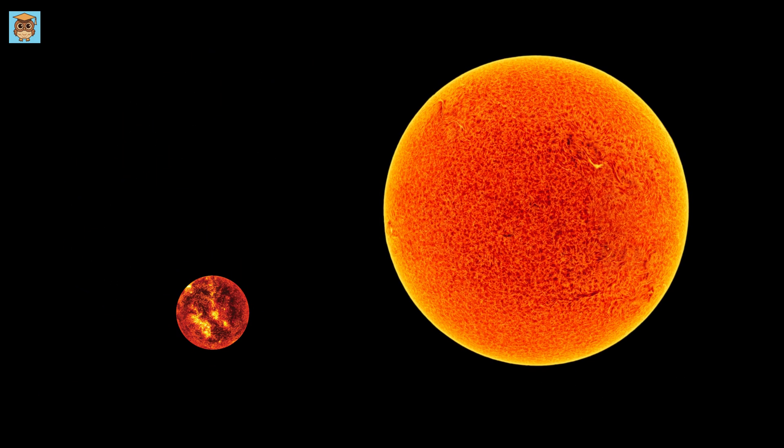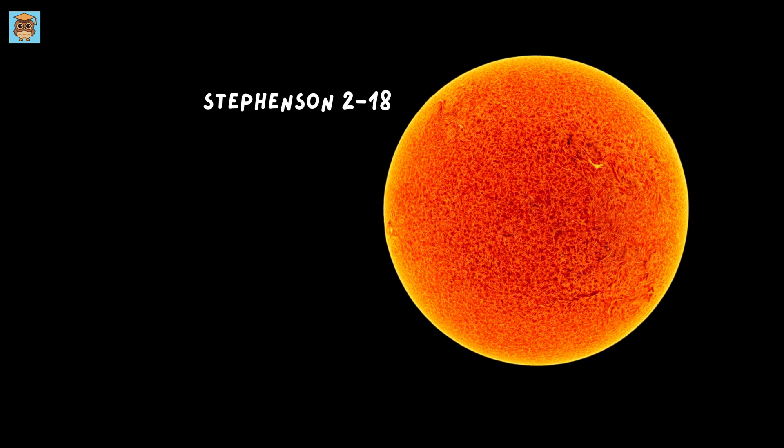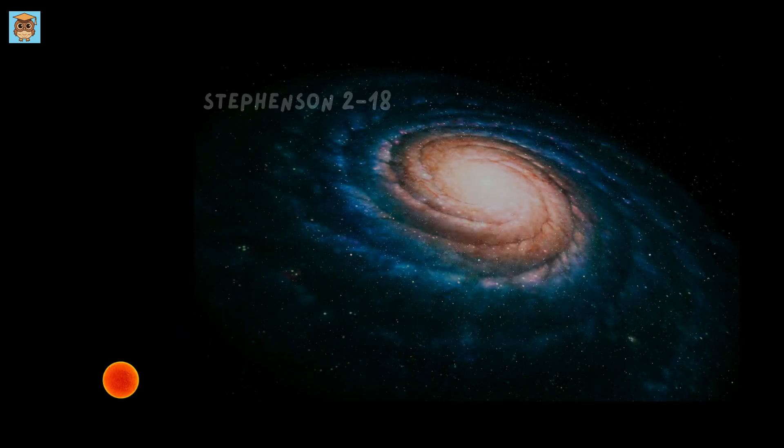The largest star we know, Stevenson 2-18, is so big that if it replaced our Sun, it would swallow Saturn. It's about 3 billion kilometers in diameter. If you traveled around it at an airplane speed, it would take you over 1,200 years just to complete one lap.